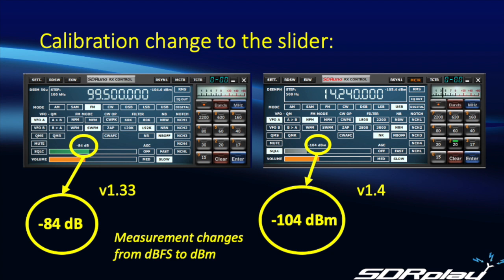But if you have really sharp eyes, you might see a slight difference on the labeling above the squelch slider. In V1.33 it was labeled in dBs — actually dB full scale — and in V1.4 that's now been changed to dBm, and is an accurate measure of the power level at the frequency of interest.